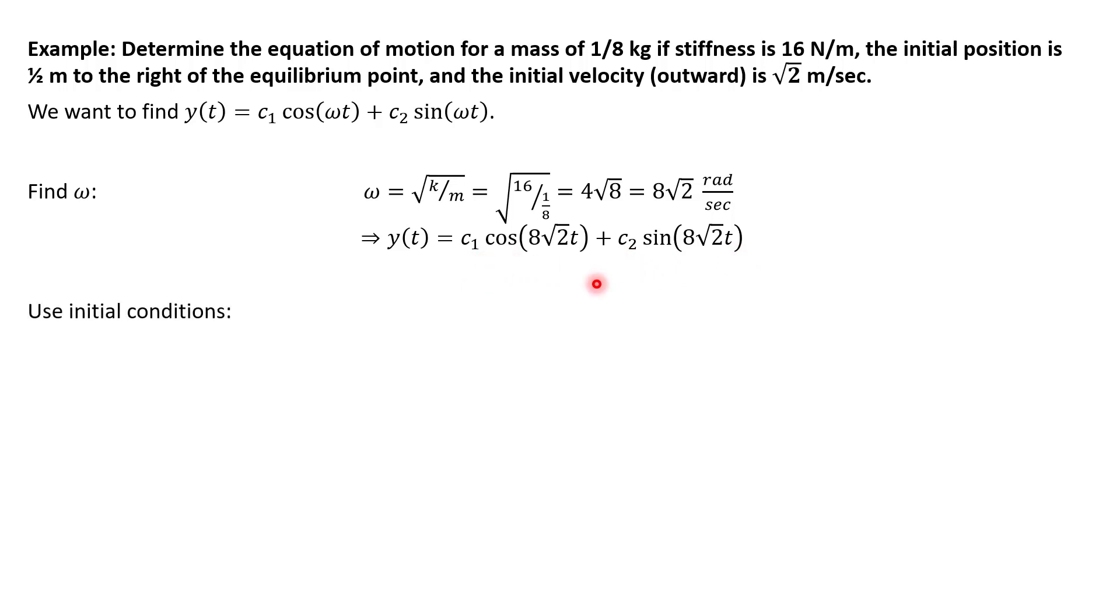So using our initial conditions, we can find c1 and c2. So the initial position, if y represents our motion, if we plug in zero, that's time zero. So initially, it should equal one-half meter to the right. So y of zero equals one-half. We plug that into our equation zero, and if we simplify, notice this term is going to be zero. And then we have c1 times one, because this is cosine of zero, and we get that c1 is just one-half.